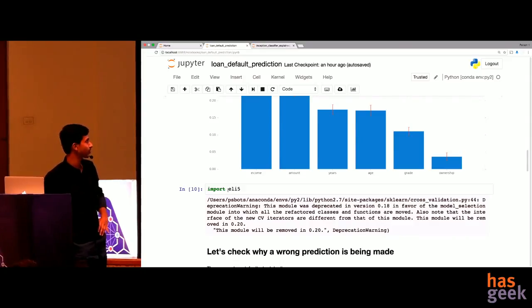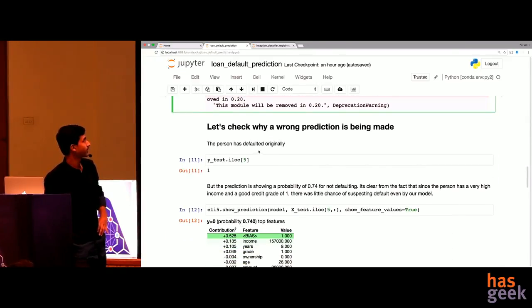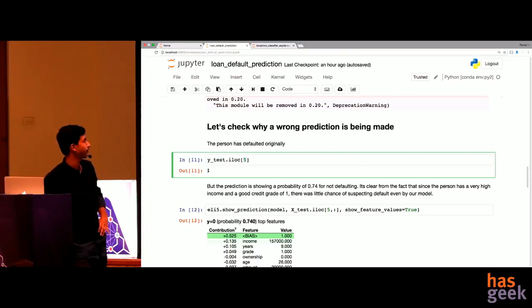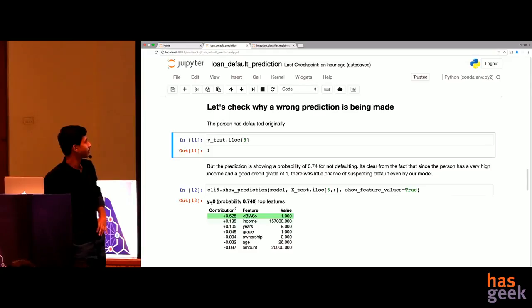Now this package actually makes it very easy. You just import ELI5. So now let's see why that wrong prediction was being made. We're taking the fifth sample data. We're seeing that it has been defaulted. One means default, zero means not default. And you see that the prediction is giving it as not defaulted.